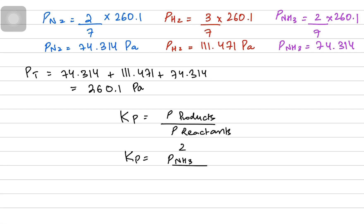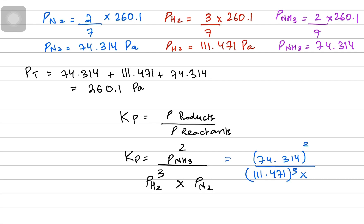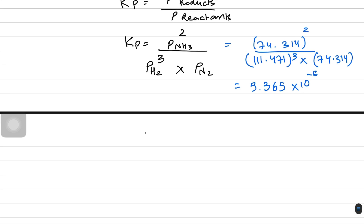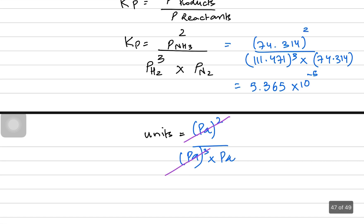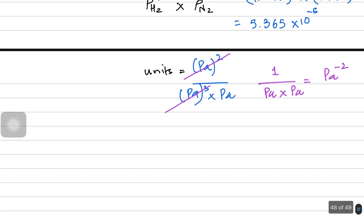For the Haber process, ammonia is the product, so Kp = (P_NH₃)² / ((P_H₂)³ × P_N₂). Substituting: (74.314)² / ((111.471)³ × 74.314) = 5.365 × 10⁻⁵. For units: the numerator is Pa², the denominator is Pa⁴, so the units cancel to Pa⁻², or Pascal inverse squared.